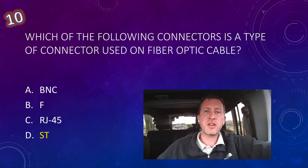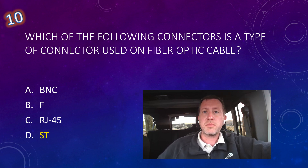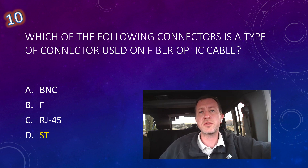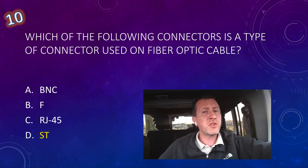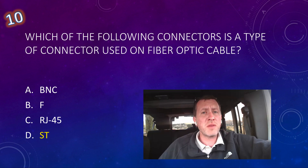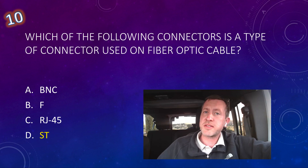Question ten: Which of the following connectors is a type used on a fiber optic cable? The BNC connector is used on coax. The F connector is also a type of coax connector. RJ45 is an Ethernet connector used on twisted pair. Option D is a type of fiber connector — you want to know the different types of fiber connectors, as all of these connectors are in the CompTIA objectives. I hope you found these questions helpful. If you're studying for other exams like Security Plus or Cisco CCNA, check out my other videos on networking and security topics. If you haven't subscribed, please click the subscribe button, leave questions in the comments, and click like. Thanks for watching — take care, we'll see you soon.